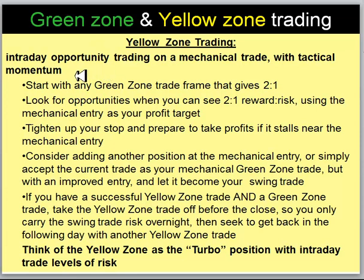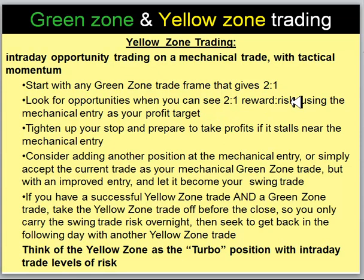The yellow zone is what I call intraday opportunity trading on these mechanical trades that we just set up, but we're looking for tactical momentum. We start with any green zone trade frame that gave us that 2-to-1 reward to risk. Inside the yellow zone, if I can see a way to buy that target where inside the yellow zone I can see 2-to-1 reward to risk, simply using the mechanical entry as a profit target, then I'm willing to do that. If you take that trade you have to tighten up your stop and be ready to take profits if it stalls near that mechanical entry, because that's the area where it stalled the day before and then failed. So we already want to have a 2-to-1 trade frame in hand so that if we do get stopped out there, we've already paid for our time.